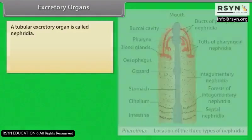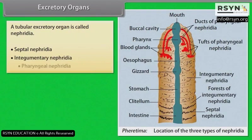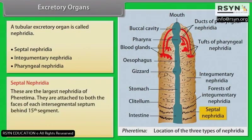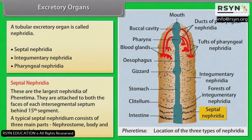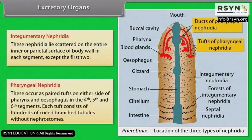Excretory Organs: A tubular excretory organ is called a nephridium. It is of three types: septal, integumentary and pharyngeal. Septal nephridia are the largest nephridia of Ferretima; they are attached to both faces of each intersegmental septum behind the fifteenth segment. Each consists of three main parts: nephrostome, body and terminal duct. Integumentary nephridia lie scattered on the inner parietal surface of the body wall in each segment except the first two. Pharyngeal nephridia occur as paired tufts on either side of the pharynx and oesophagus in the fourth, fifth and sixth segments; each tuft consists of hundreds of coiled branched tubules without nephrostomes.